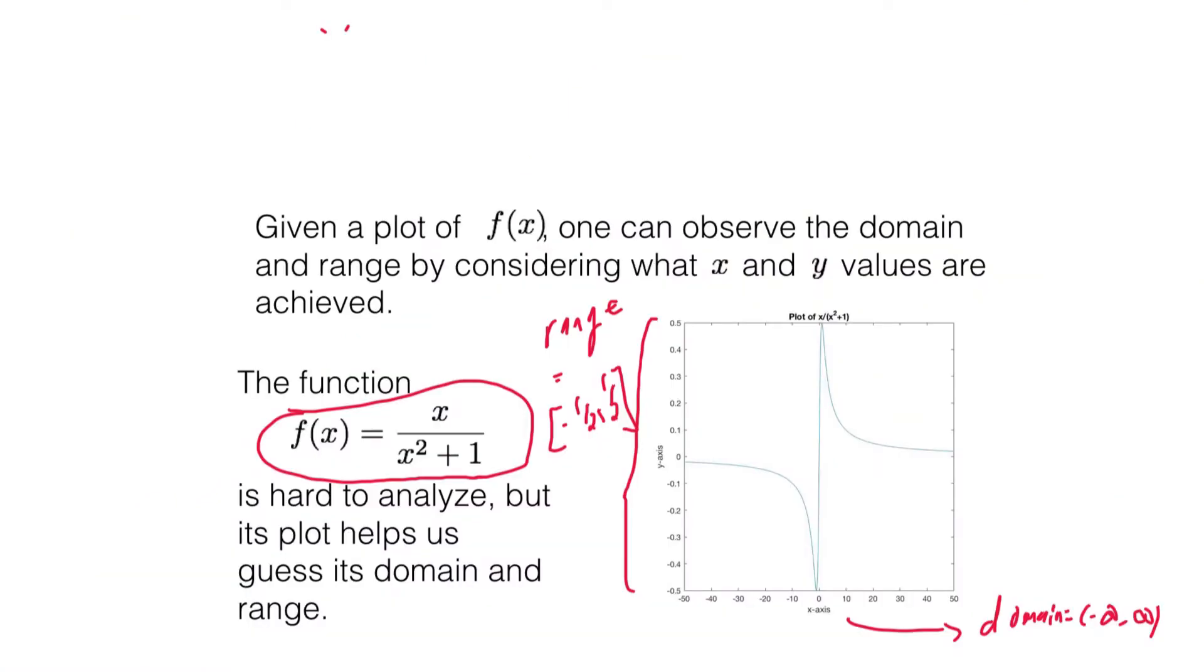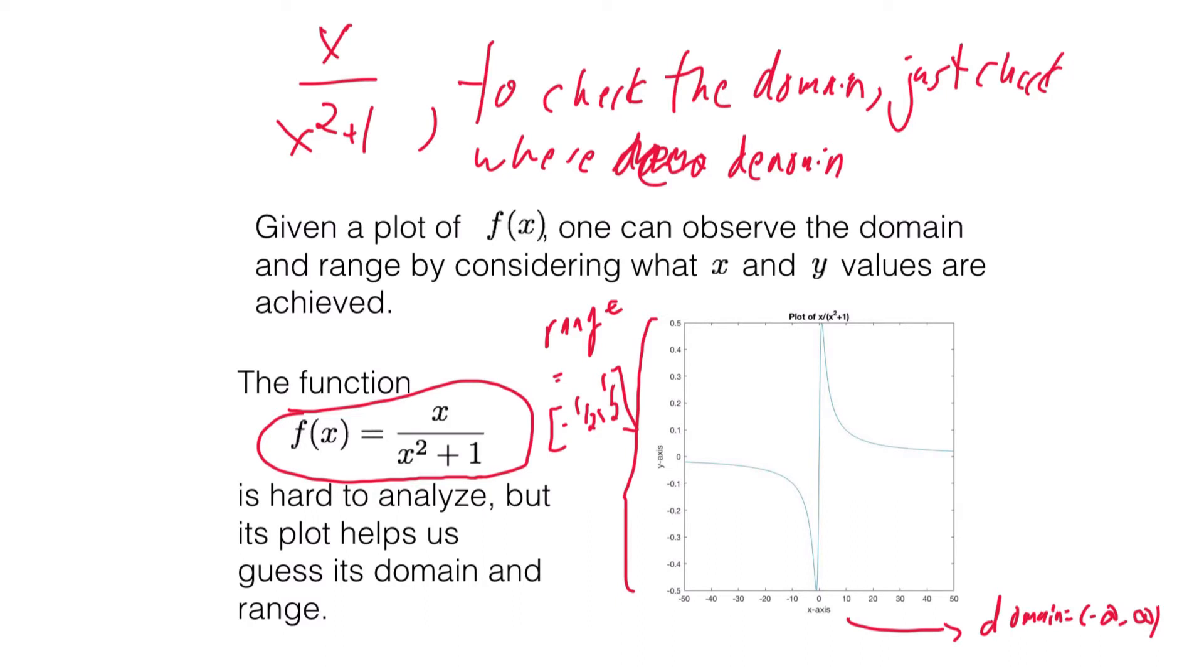I will remark, however, that for my example x over x squared plus one, to check the domain, just check where the denominator is non-zero. Because these are the points at which the fraction will be defined. At the points where the denominator is zero you may run into problems with trying to define your function there, because division by zero is not allowed.